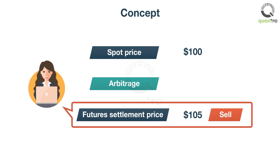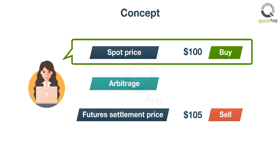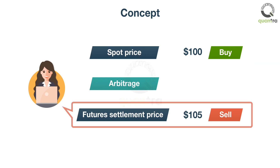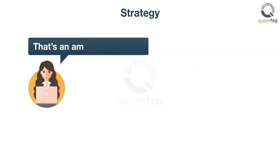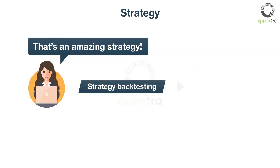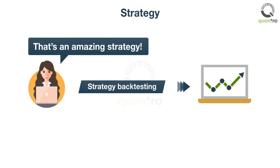I can sell a futures contract at $105, then buy the spot at $100. The next day, I will deliver the asset to the futures buyer since the futures expired. Thus, I earned $5 from this transaction. Isn't that an amazing strategy? And the strategy backtesting concurs, showing excellent results.